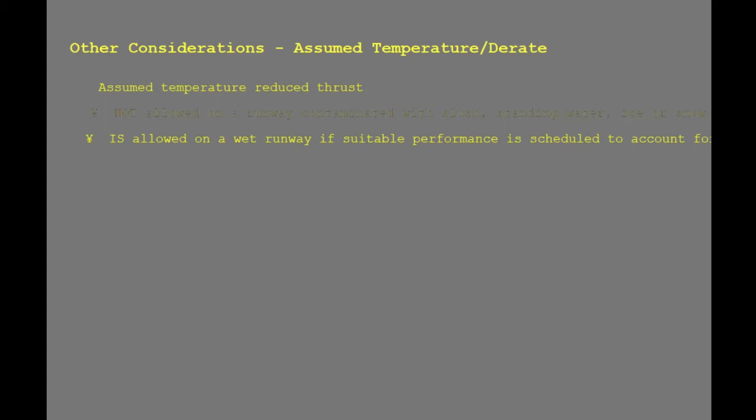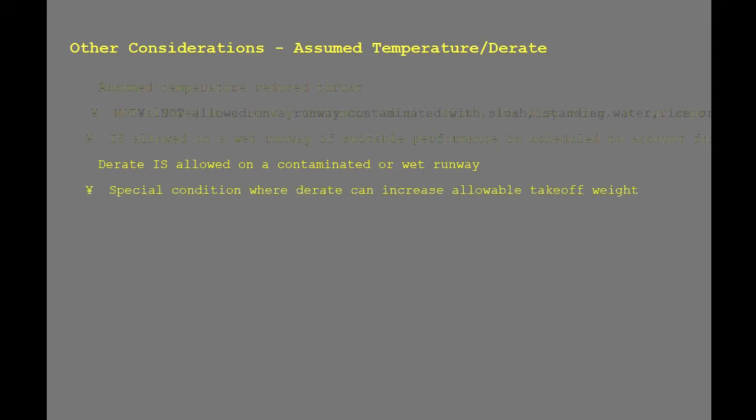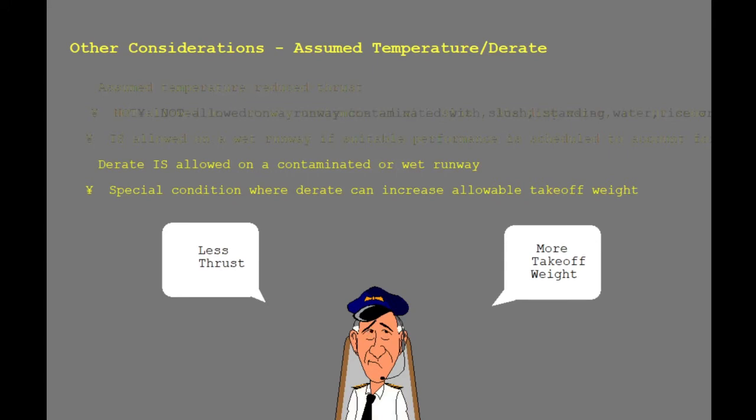Assumed temperature reduced thrust is allowed on a wet runway if suitable performance is scheduled to account for the increased stopping distance. D-rate is allowed on a contaminated or wet runway. In fact, there are times when D-rate can be used to increase the takeoff weight on contaminated or slippery runways. In special cases, lower thrust means more takeoff weight. This is explained in the section on reduced thrust.